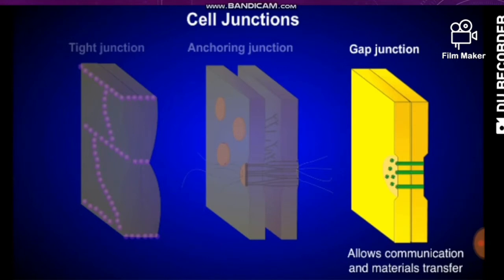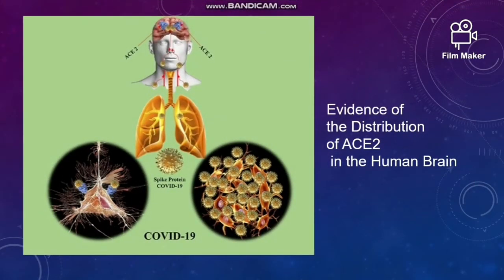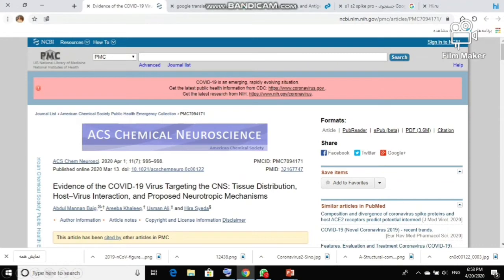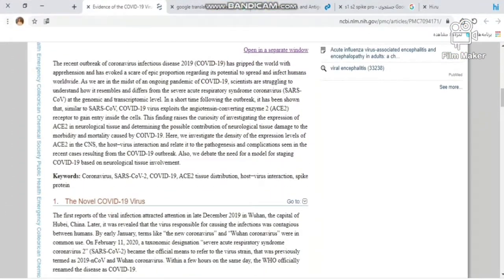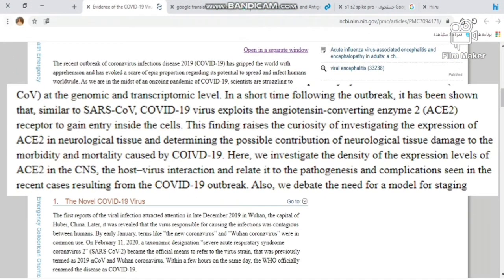As I mentioned in a previous video, coronavirus can easily bind to ACE2 receptors by its spike protein. We are going to talk about the evidence of distribution of ACE2 receptors in the human brain. There is an article about evidence of COVID-19 virus targeting the CNS — tissue distribution, host-virus interaction, and proposed neuropathic mechanisms. Let's zoom in on important parts of this article.